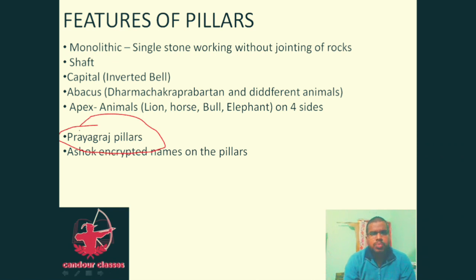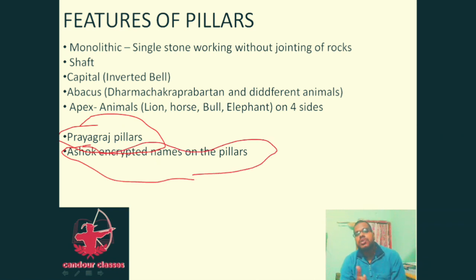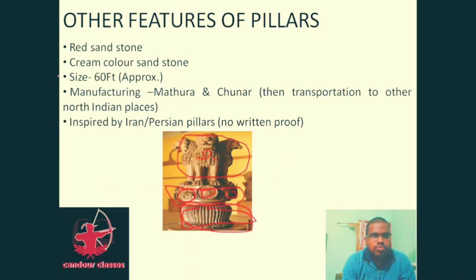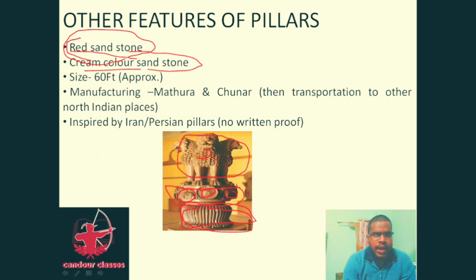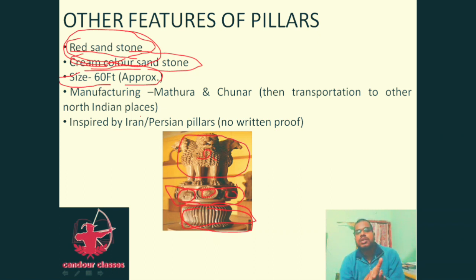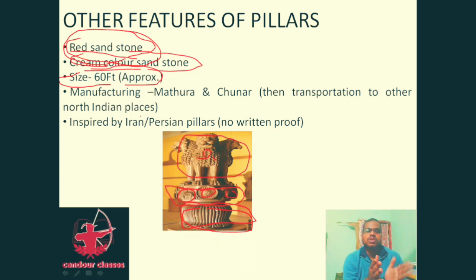The Prayagraj (Allahabad) pillar is also notable, and Ashoka engraved his name on the pillars. The material used is red sandstone, though cream-colored sandstone was also used in certain pillars. The size is approximately 60 feet, and manufacturing was done at Mathura and Junar, from where the pillars were transported to different areas of north India.